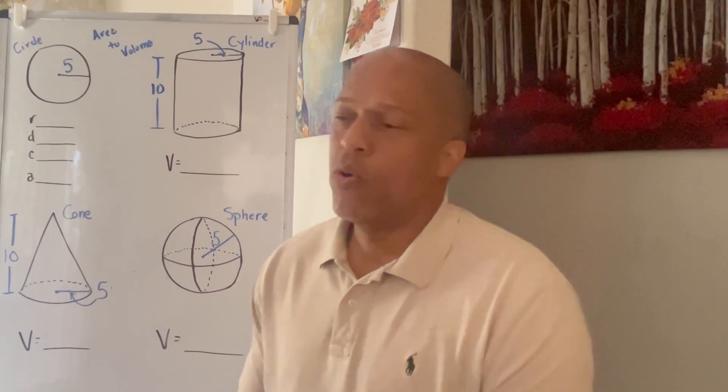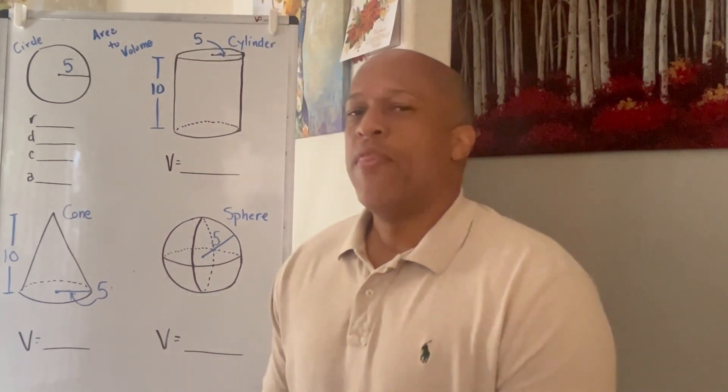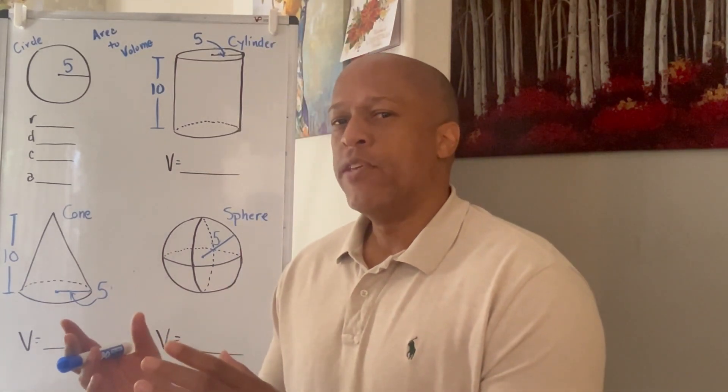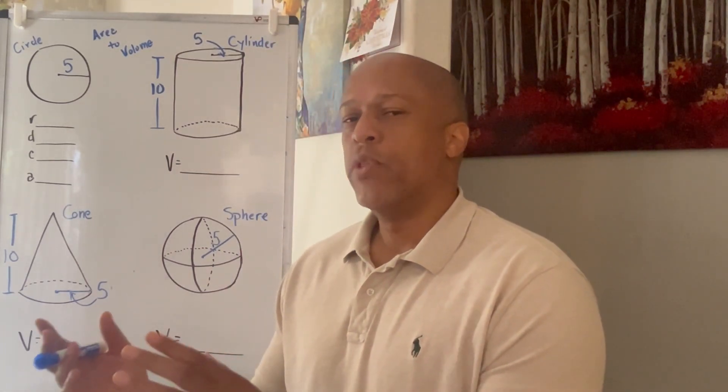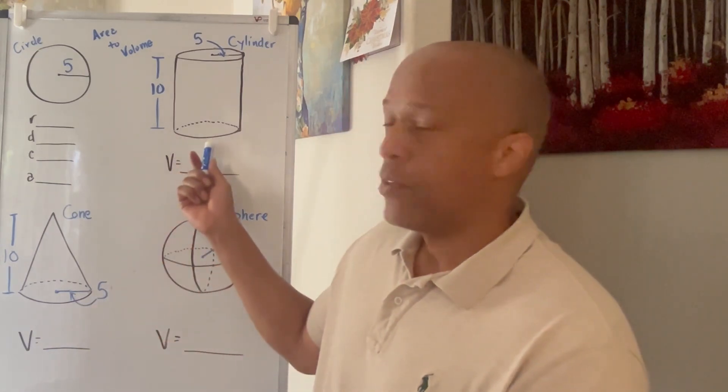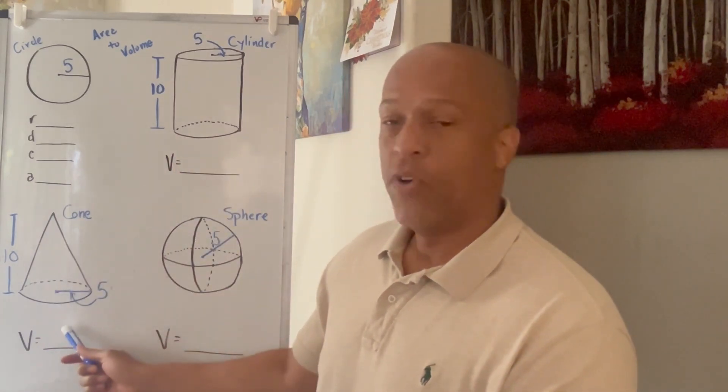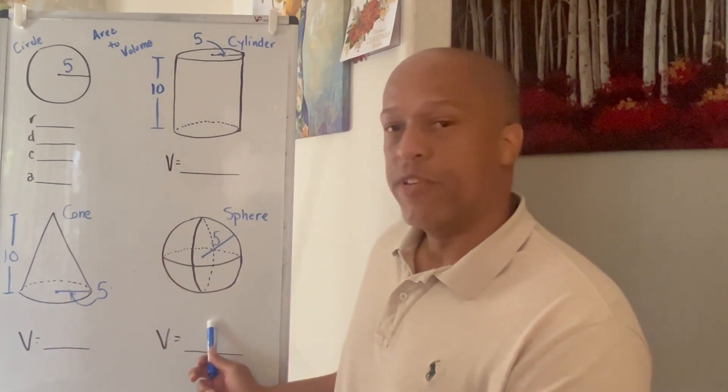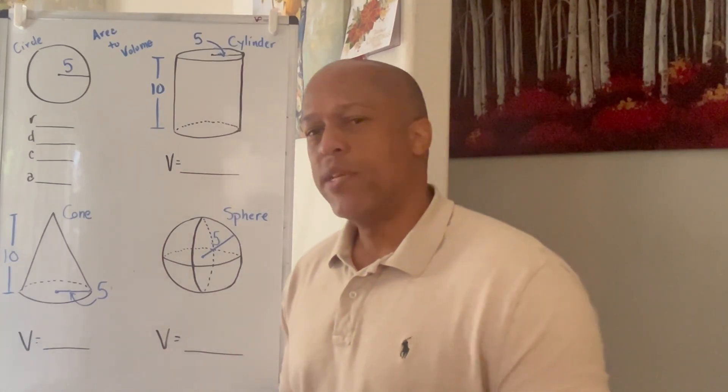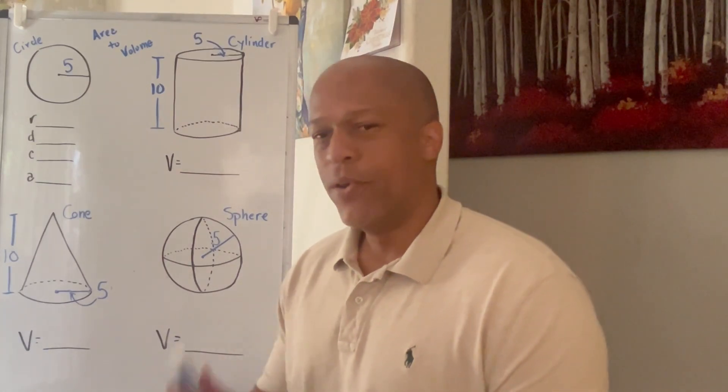On my whiteboard today, what I wanted to go over is the area of a circle and seeing the area of a circle and go from that to the relationship between a cylinder, the volume of a cylinder, the volume of a cone, and the volume of a sphere. They're all connected and we want to see these connections in math. So let's begin.